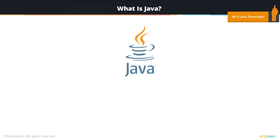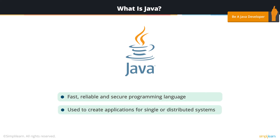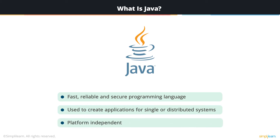First, let's talk about what Java is. It's a fast, reliable and secure programming language that can be used in several websites and applications. It can be used to create applications in a single computer or one that could be distributed across several servers and clients. Java can be used in several scenarios independent of the system that it is used on.